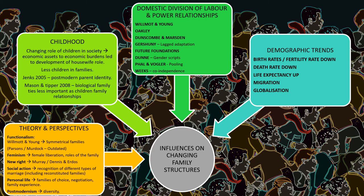On demography and its impact on family structure: falling birth and fertility rates mean fewer children and smaller family sizes, which may produce more beanpole families - tall and thin. Falling death rates link to the greater role of grandparents and more beanpole families. Rising life expectancy could lead to more extended families as older relatives need care and move in with family. Longer life expectancy also increases the chance of people marrying, divorcing, and separating, leading to more reconstituted families, single-parent families, and lone-person households.